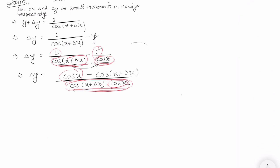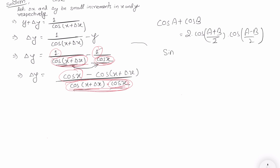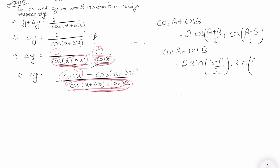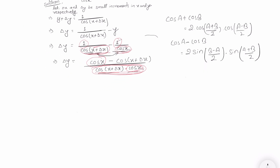We now have the numerator in the form cos A minus cos B. The formula is: cos A minus cos B equals 2 sin((A plus B)/2) times sin((A minus B)/2). We will use this formula since we have cos x minus cos(x plus delta x).